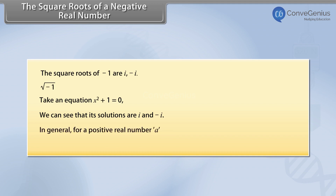In general, for a positive real number A, the square root of minus A is equal to the square root of A multiplied by the square root of minus 1, which equals the square root of A multiplied by iota.